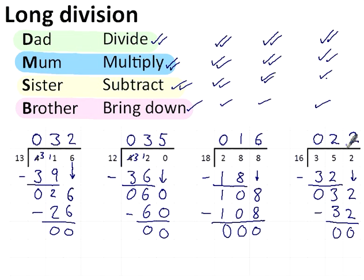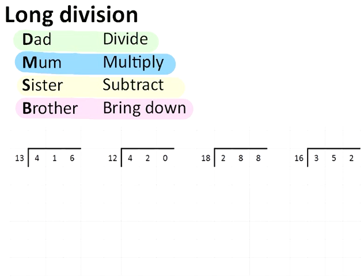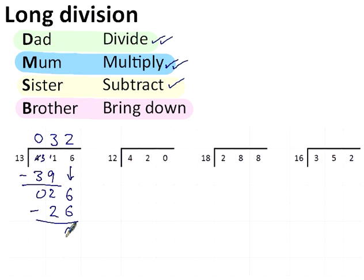I'm going to just repeat these four questions very quickly, but I'm going to go through each question in turn rather than each step in turn. So here are those four questions again. 13 into 4 doesn't go. 13 into 41 goes 3 times. That's divide. 3 times 13 is 39. That's multiply. Subtract. That's done. Bring down. Now I've got 26. 13 into 26 goes 2 times. That's my division. 2 times 13. That's my multiplication. Subtract. 6 take away 6, 0. 2 take away 2, 0. Done. The answer is 32.